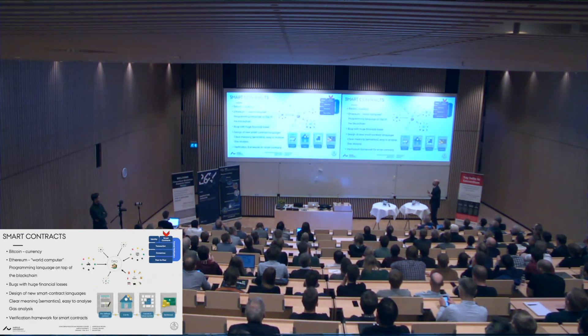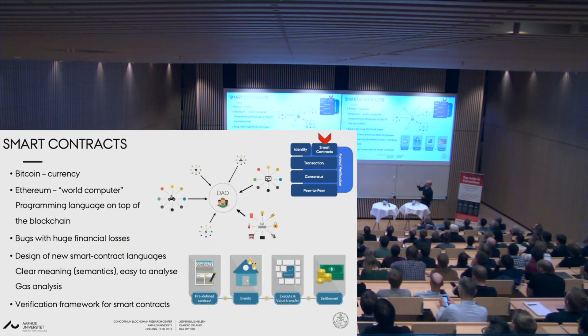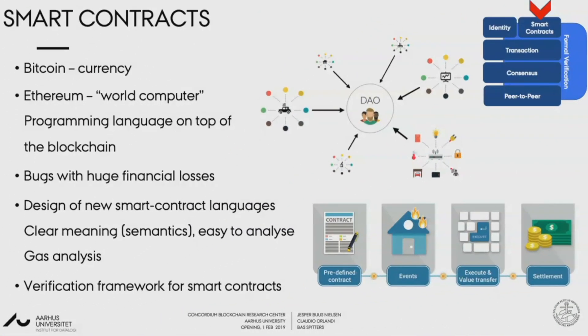Now I want to move on. That was an explanation of what formal verification is — now I want to go to the smart contract language. I need to explain that this is the last part of what makes a blockchain, as you can see in the picture. To explain what a smart contract is, I need to step back a bit.